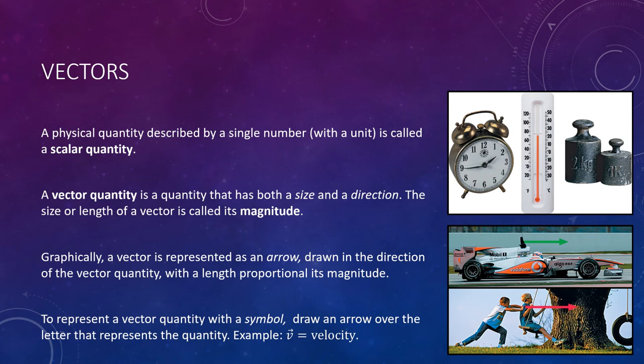For example, to describe the motion of a car, you must specify not only how fast it is moving, but also the direction in which it is moving as well. A vector quantity is any quantity that does have both a size and a direction. The size or length of the vector is called its magnitude. The magnitude of a vector can be positive or zero, but it cannot be negative. A scalar is anything without a direction, and a vector is anything that includes a direction, and the size or length of that vector is its magnitude.